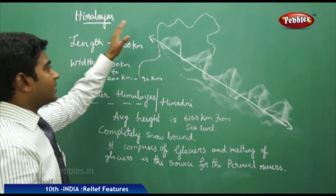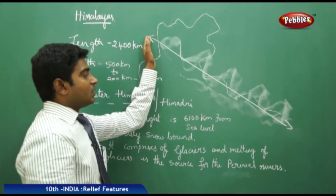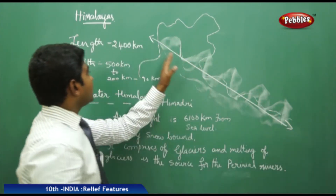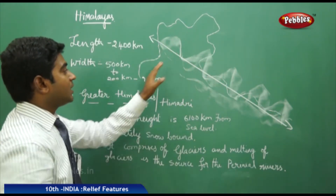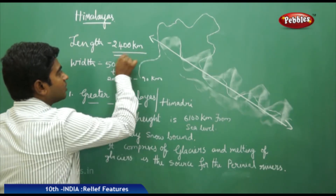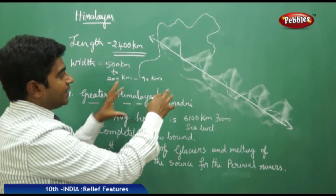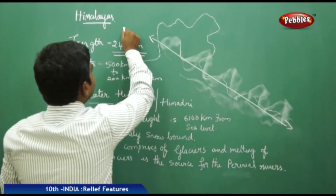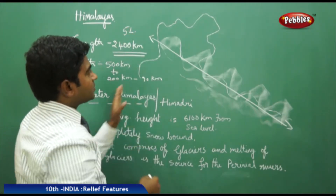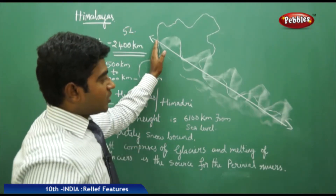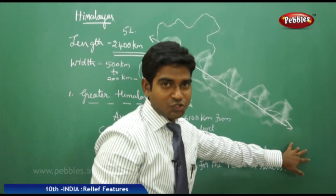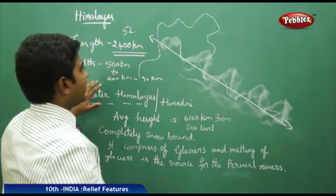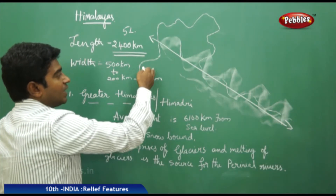The Himalayas extend from north to the northeastern range, covering a distance of nearly 2,400 kilometers, and occupy an area of nearly 5 lakh square kilometers from Jammu and Kashmir to the Arunachal Pradesh region. They have a width of nearly 500 kilometers near the Jammu region.